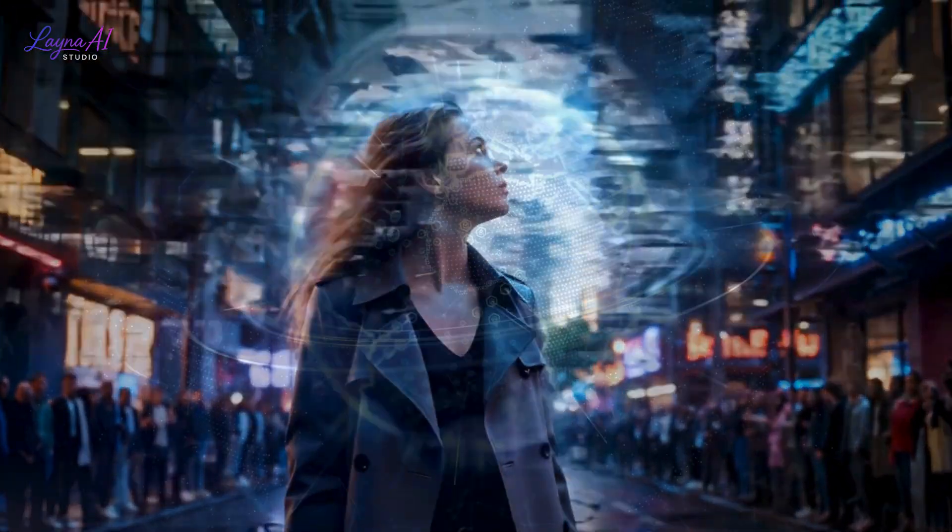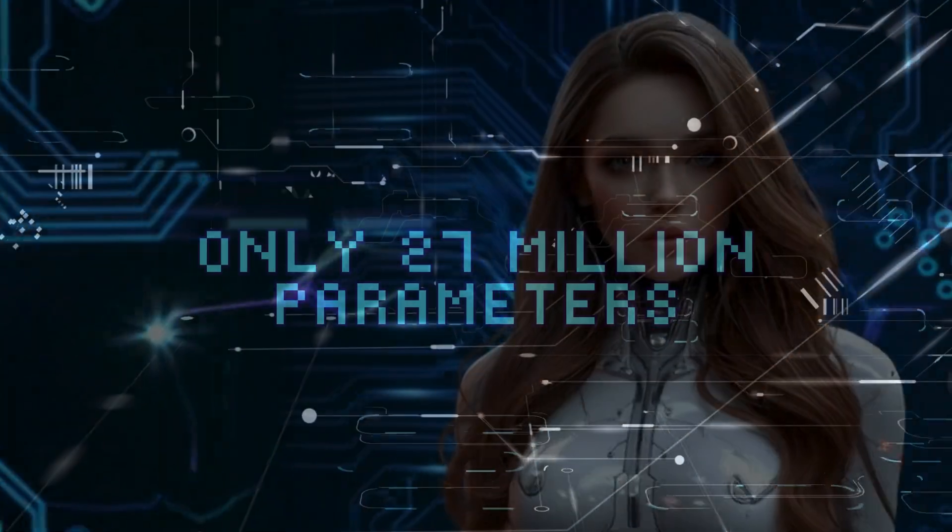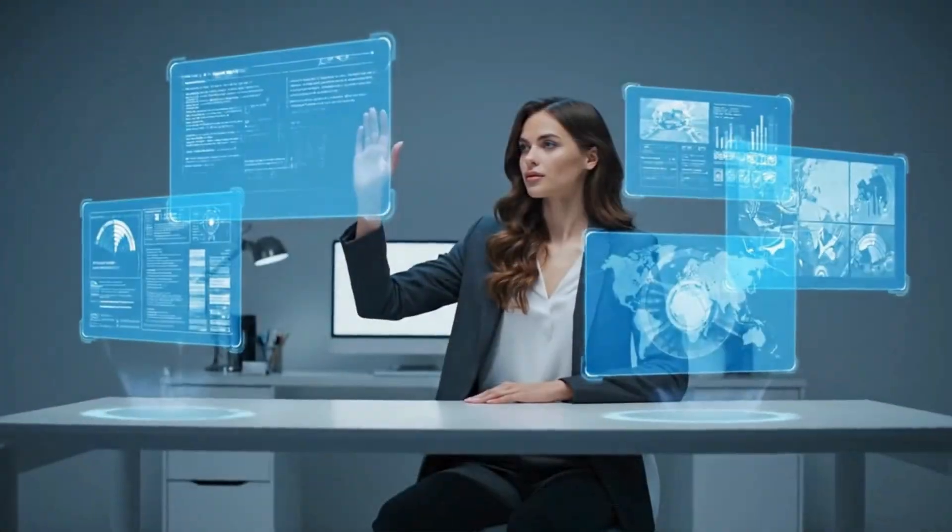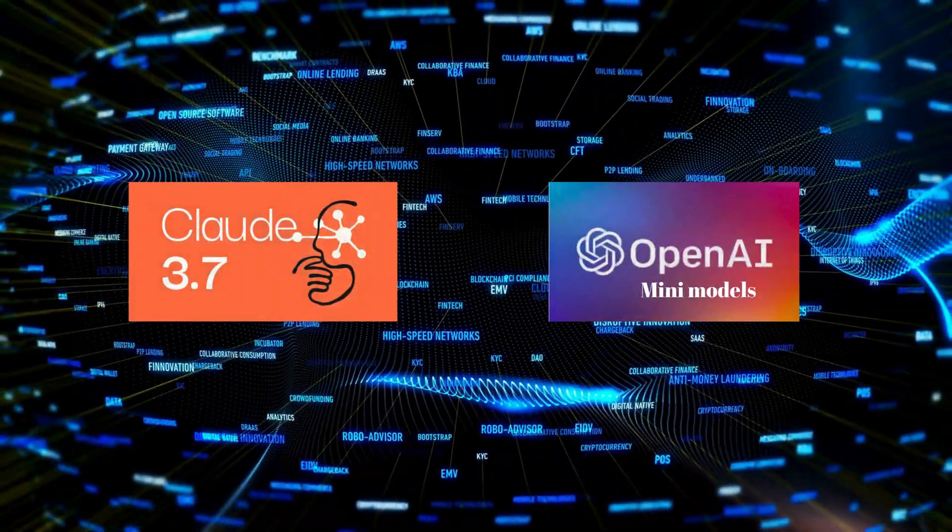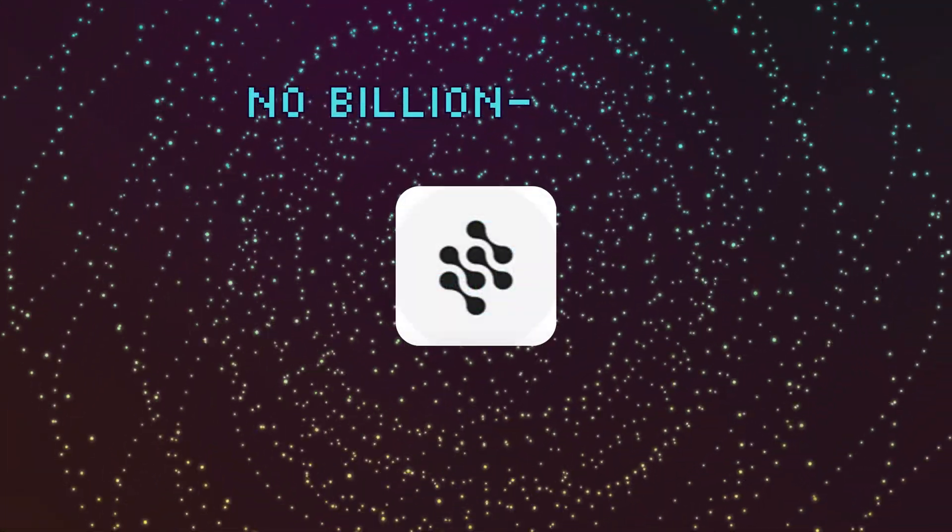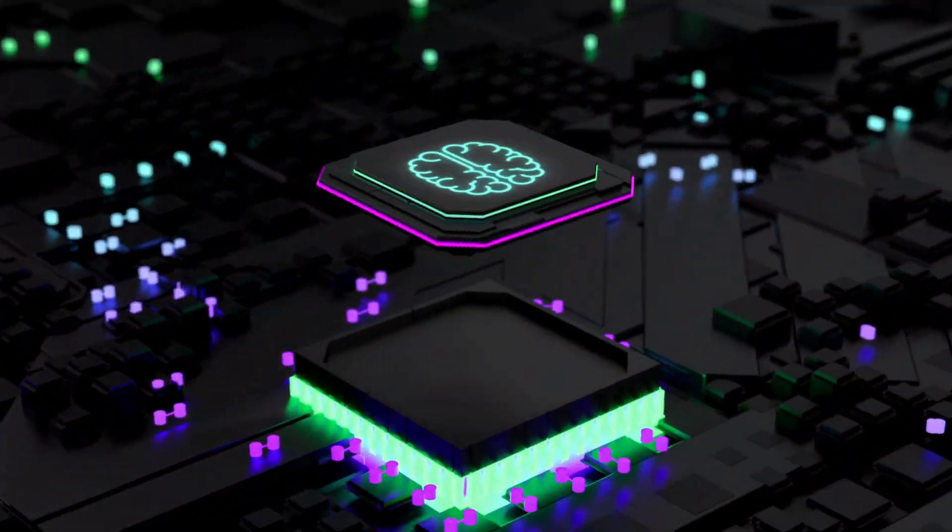A tiny startup in Singapore just shocked the entire AI world. They built a model with only 27 million parameters, smaller than GPT-1 by four times, but somehow it's beating Claude 3.7 and OpenAI's mini-models in reasoning. No billion-dollar training, no massive data sets. What's the secret?